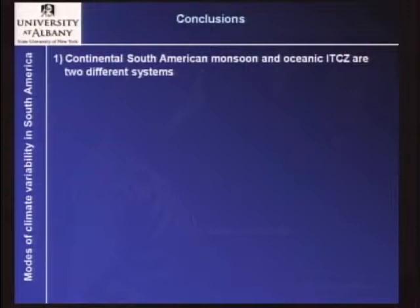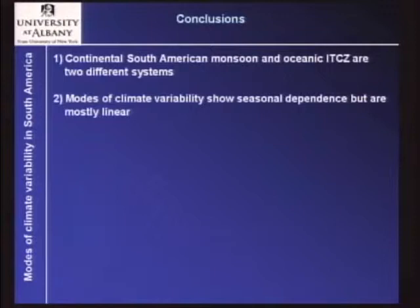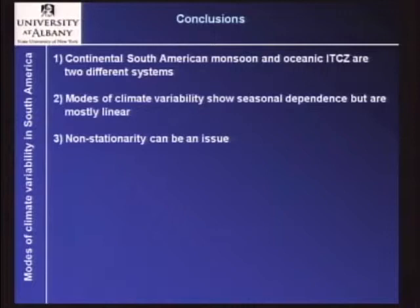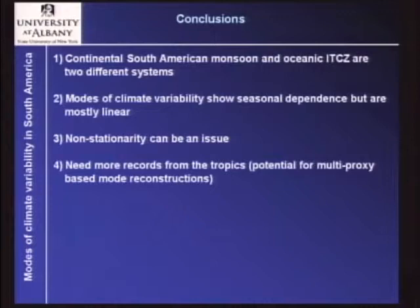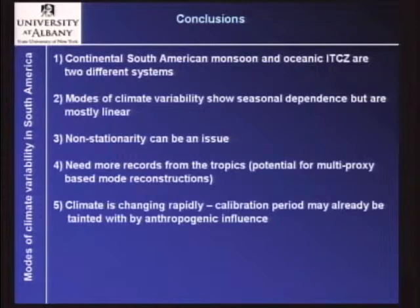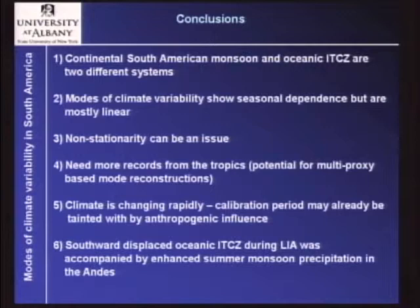To conclude: if at all possible, it's a good thing to make a distinction between an ITCZ and a monsoon, because they are different and sensitive to different forcings. If you are trying to reconstruct modes of climate variability, be aware of a seasonal bias — but the good news is that most of these modes have a linear impact in South America. Non-stationarity can be a problem. We need more records from the tropics; we have a fairly good high-resolution archive, mostly documentary sources and tree rings, from mid-latitudes in southern South America, but not from the tropics. The issue of rapidly changing climate affecting some of these modes can be a problem. Finally, we now have clear evidence that the southward displacement of the ITCZ over the oceans was accompanied by a strengthening of the hydrologic cycle over the continent.